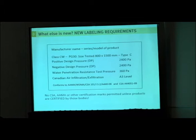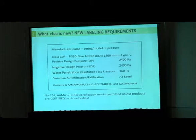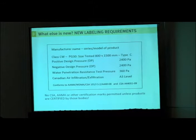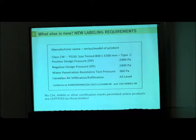The formatting may change, but that type of information needs to appear and it always must appear in the same order: your primary designator with your class, performance grade, and size tested, and then your design pressure, water pressure, and air, and so on.